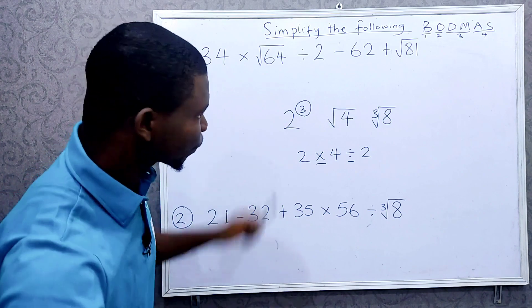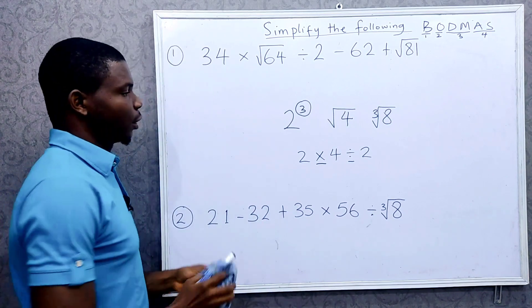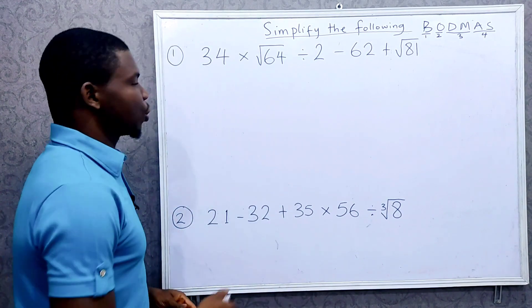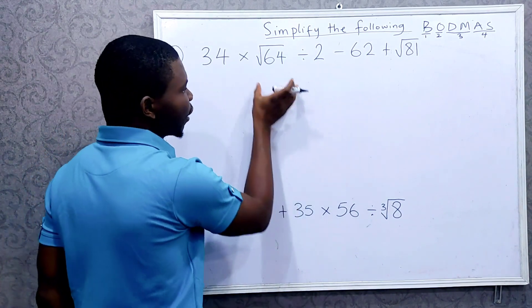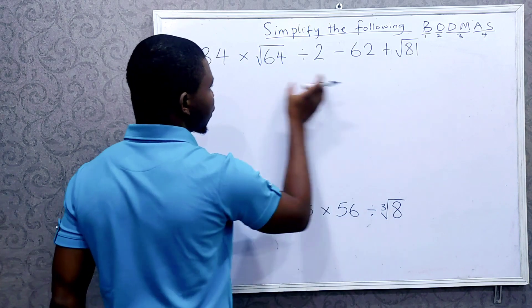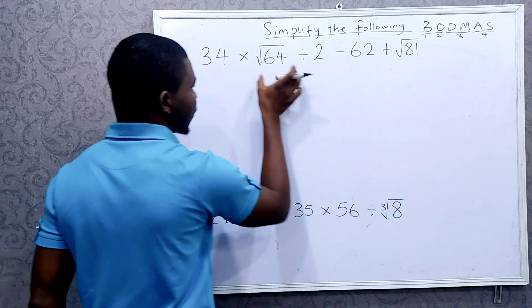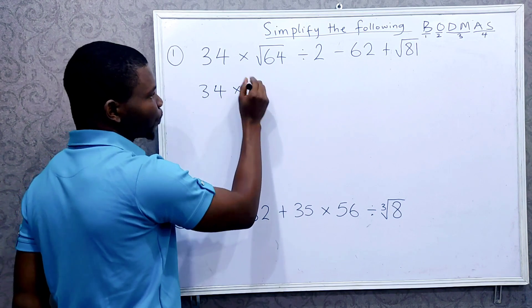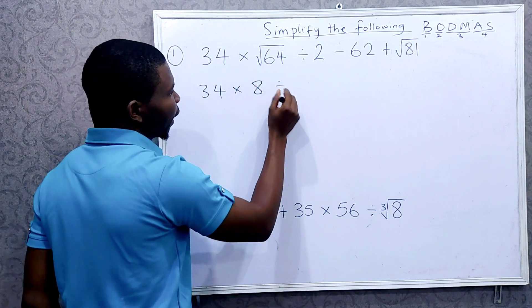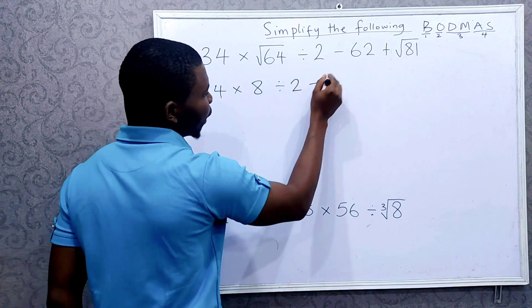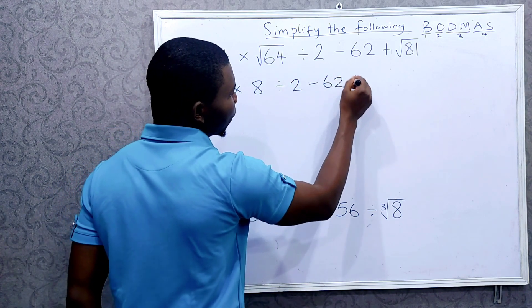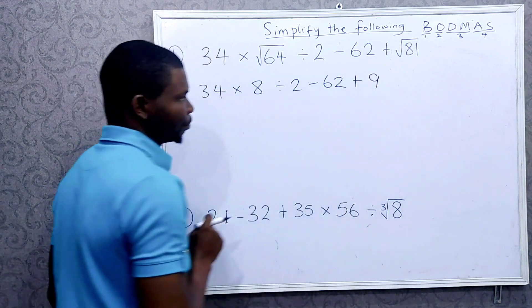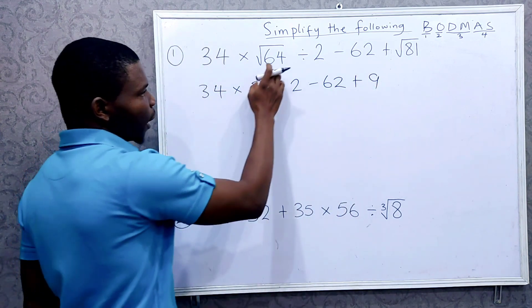So let's use that to solve this equation. Which one are we going to do first? We don't have brackets, we have order or exponents. So this is the one we do first. So we have 34 times square root of 64 is 8, divided by 2, minus 62, plus square root of 81 is 9. So we are done with the order or exponent.